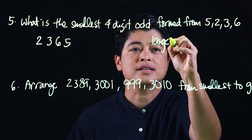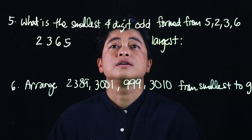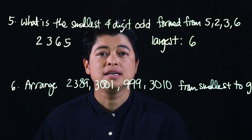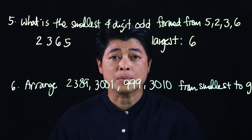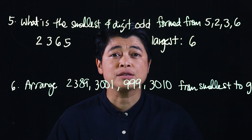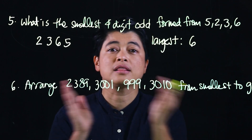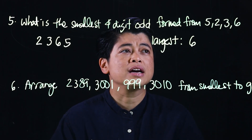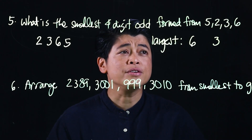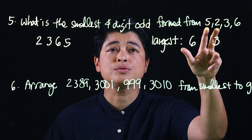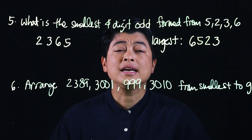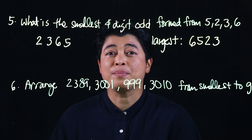Now, what if it asks for the largest four-digit odd number? We start with the largest digit, which is six. We know we have to end with an odd number — between five and three. Since we want the largest overall number, we end with the smallest odd, so that the larger numbers can be in front. The smaller odd is three, so we end with three. The leftover digits are five and two; since we want the largest, five comes before two. The answer is 6, 5, 2, 3.